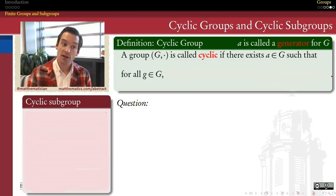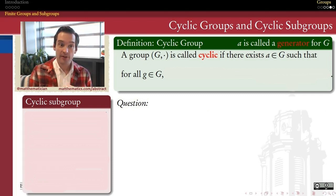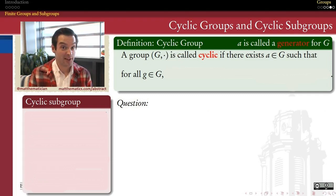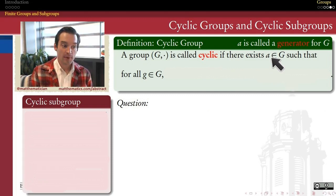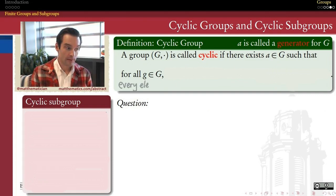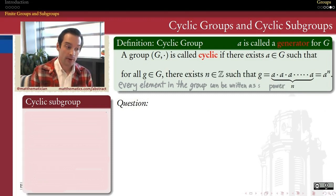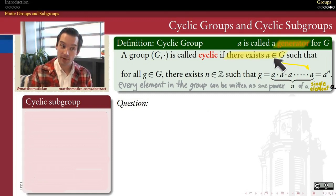Before we get to subgroups as a general notion, let's pick up from our previous video thinking about what happens when we look at the powers of a single element. We're going to start with a definition: the definition of what's called a cyclic group. A group is called cyclic if there exists an element in that group — call it A — such that every element in the group can be written as some power of that single element A. A group is called a cyclic group when there's a single element whose powers give us all of the elements in that group.